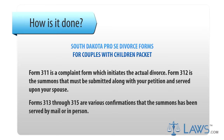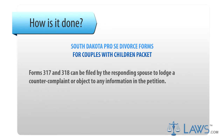Step 3: Forms 313-315 are various confirmations that the summons has been served by mail or in person. Step 4: Forms 317 and 318 can be filed by the responding spouse to lodge a counter-complaint or object to any information in the petition.